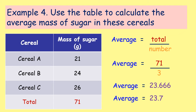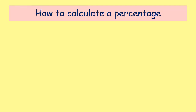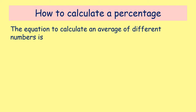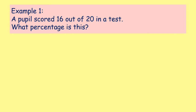What we're going to go on to now is percentages. Percentages is another type of calculation we'd like you to be able to do in S1 for all the sciences and in particular for chemistry. The equation we're going to use is: the percentage equals the number of things you are being asked about, divided by the total number of things, multiplied by 100. That multiplying by 100 is what makes something a percentage. It might seem complicated, but we'll go through a few different examples.